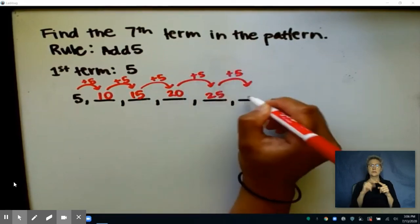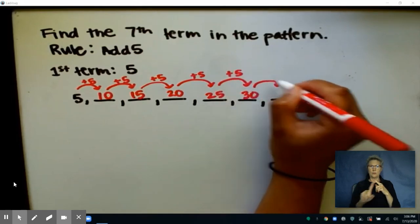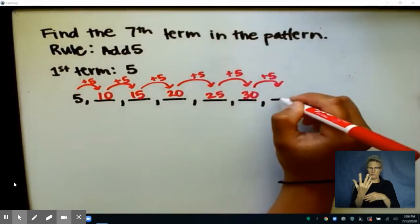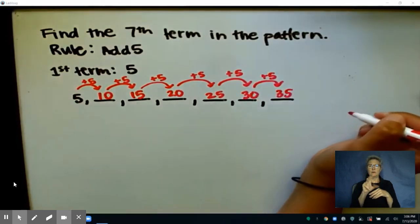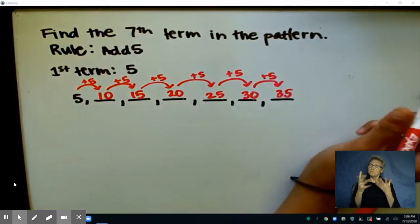We'll continue. We're at 30 now, and I have one more final hop to make here, and I find that 30 plus 5 is 35, and so that looks like that's my seventh term in the sequence.